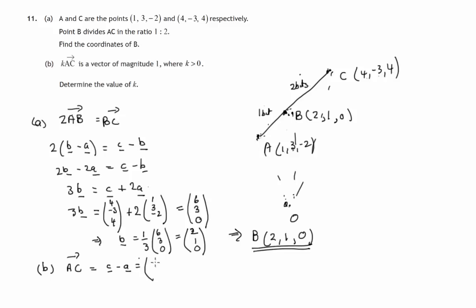Components of vector C from the origin out to this point would be (4, -3, 4), minus vector A, position vector of A, that's (1, 3, -2). X components: 4 minus 1 is 3. Y components: -3 minus 3 is -6. Z components: 4 minus -2, that's 4 plus 2, that's 6.